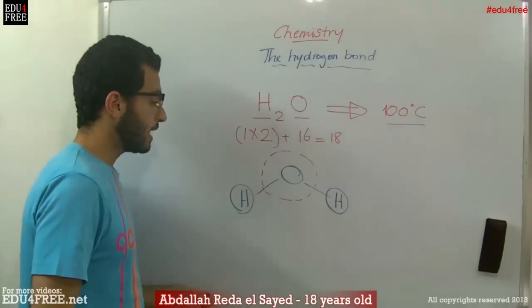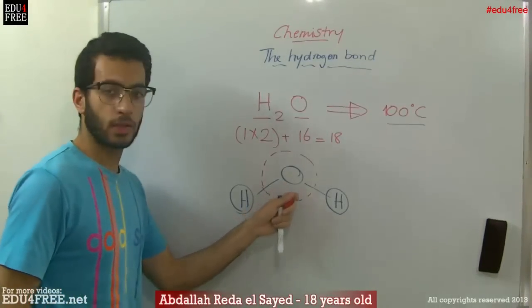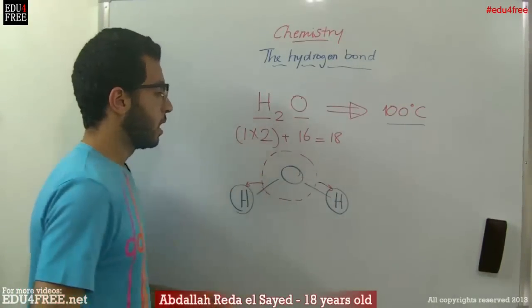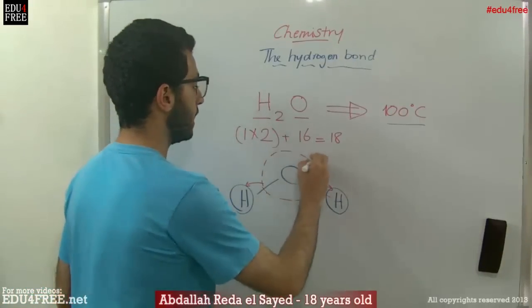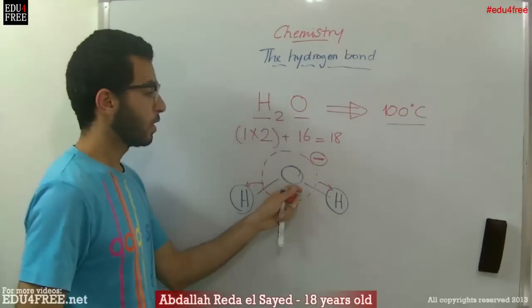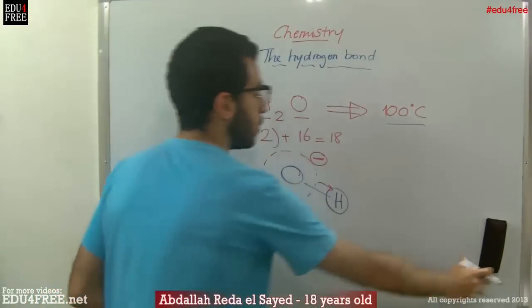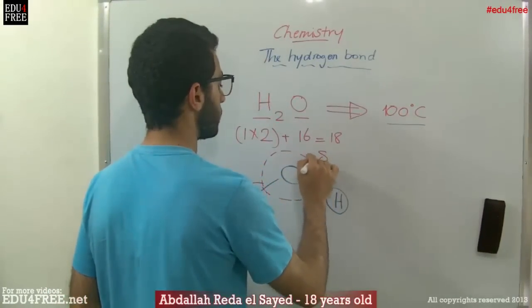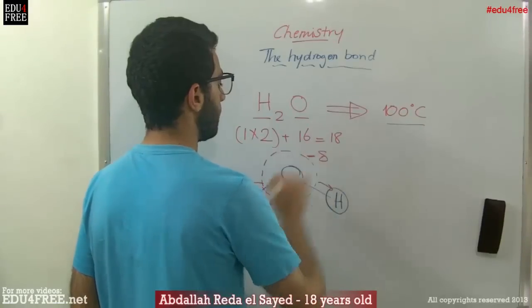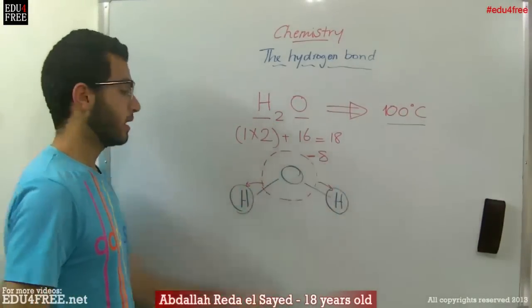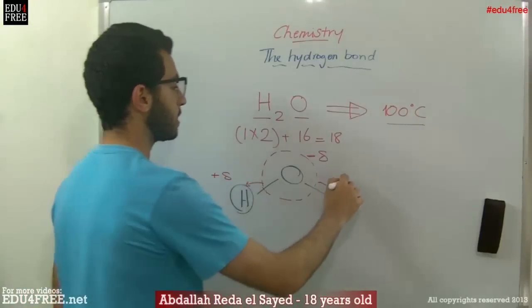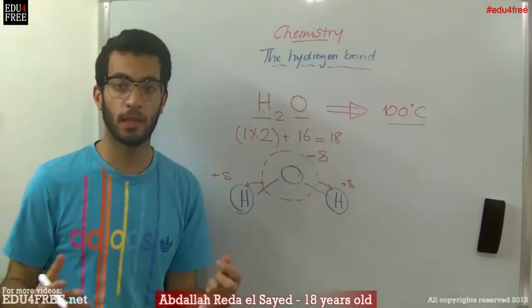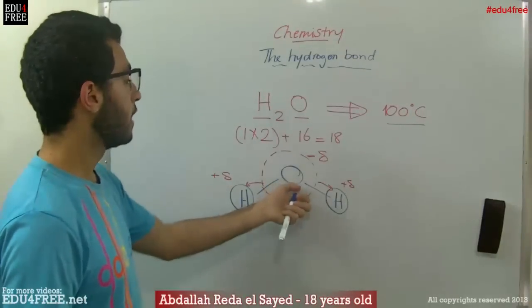But we cannot say that oxygen takes the electron all the time. Sometimes the electrons go to the hydrogen atoms. So in this case we cannot put a negative charge on the oxygen, not a full negative charge. But instead we add a partial negative charge, we refer to as delta negative. So oxygen takes this partial negative charge and hydrogens take the positive partial charge, because they are donating the electrons for most of the time.